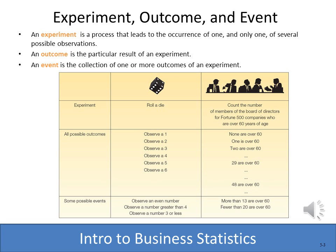Just like every other topic in statistics, we're going to have a few terms that we need to discuss. The first is the term experiment — an experiment is the process that leads to an occurrence of one and only one of several possible observations. For example, an experiment might be rolling a die or flipping a coin.